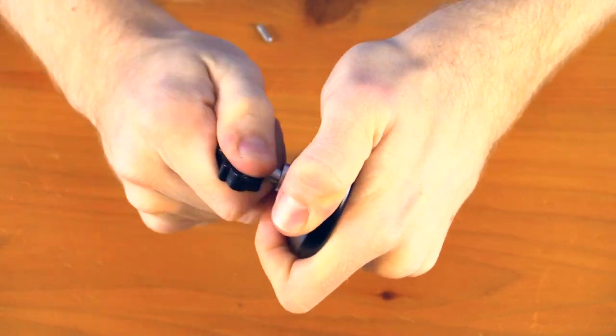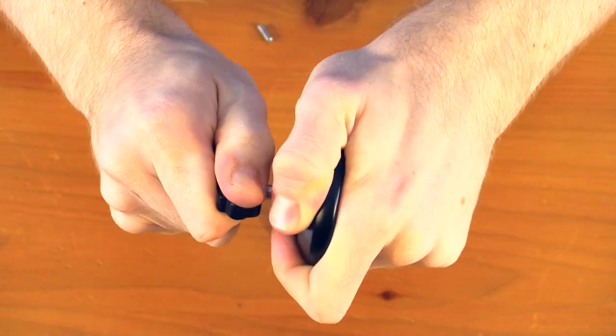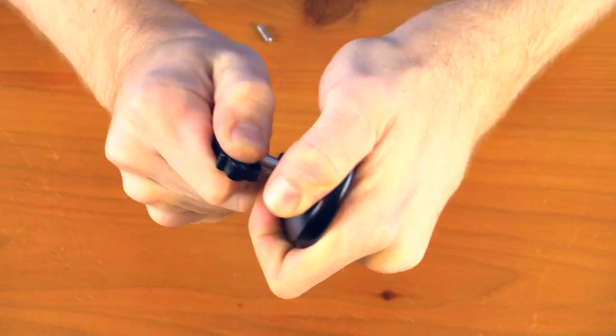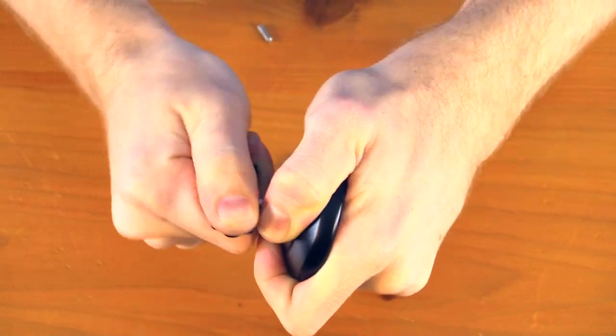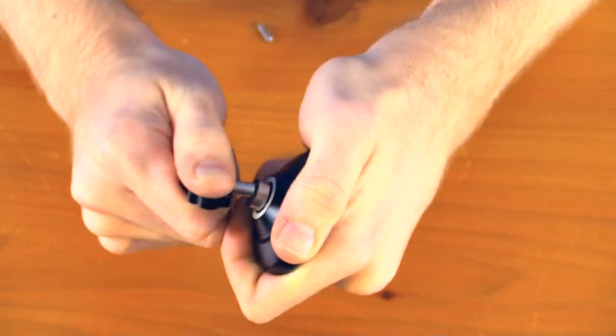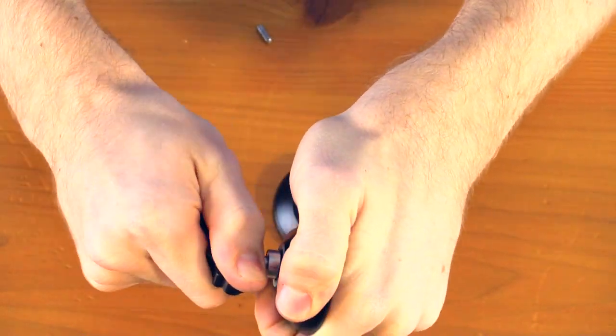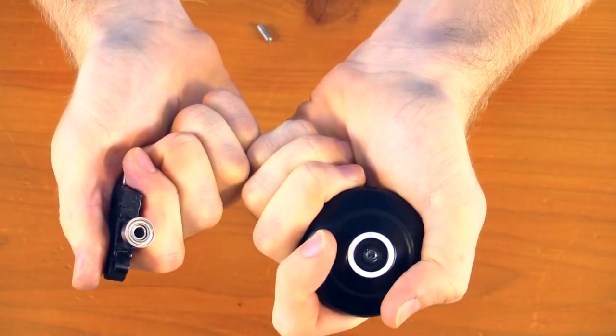After a couple of wiggles, just like this, the bearing should pop right out. It wants to fight back with me today. Slowly, we're going back and forth, and the bearing comes out.